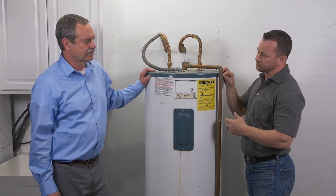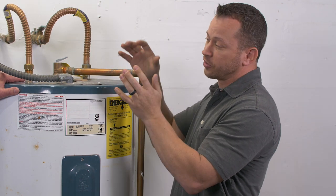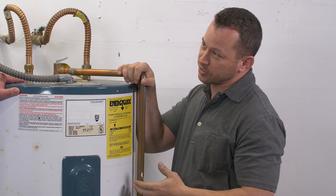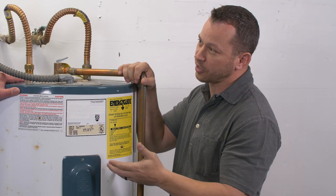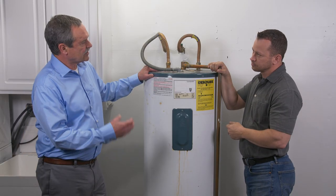The next thing that you have to consider is airflow. In this case, we're in a garage, so it's not going to require a duct kit, but if we were in a smaller space, we might need to do that. The other thing is we're going to draw some moisture out of the air in the form of condensate, and we need to dispose of that properly as well.